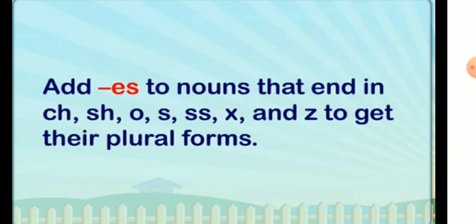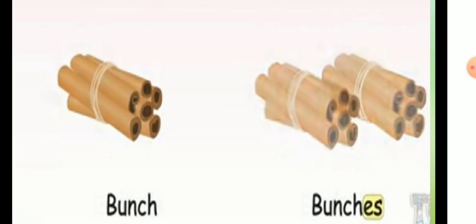We add 'es' to the singular noun when it ends in ch, sh, o, s, double-s, x, or z to get their plural form. Some examples of this rule: 'bunch' — see the last letters of 'bunch'. When we make it into plural form, we add 'es' after 'ch', giving us 'bunches'.